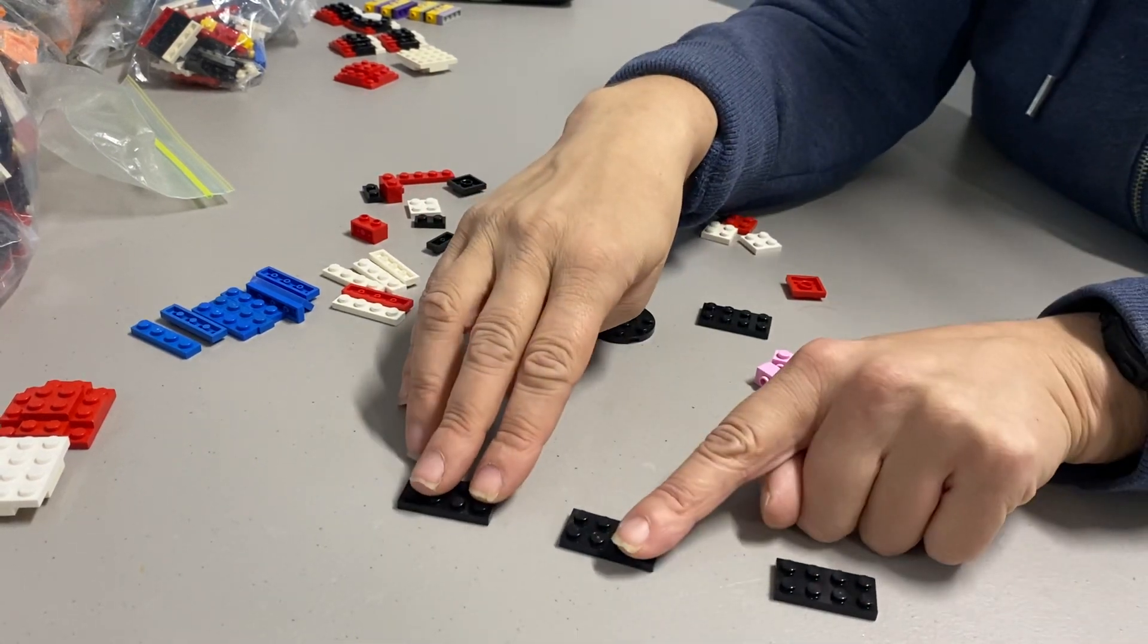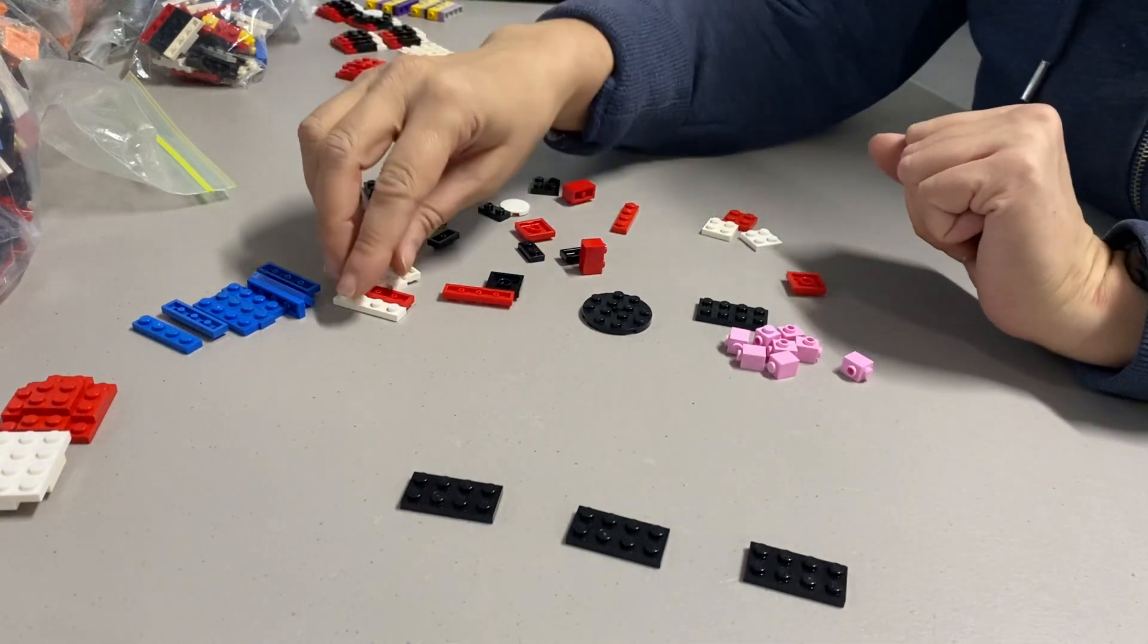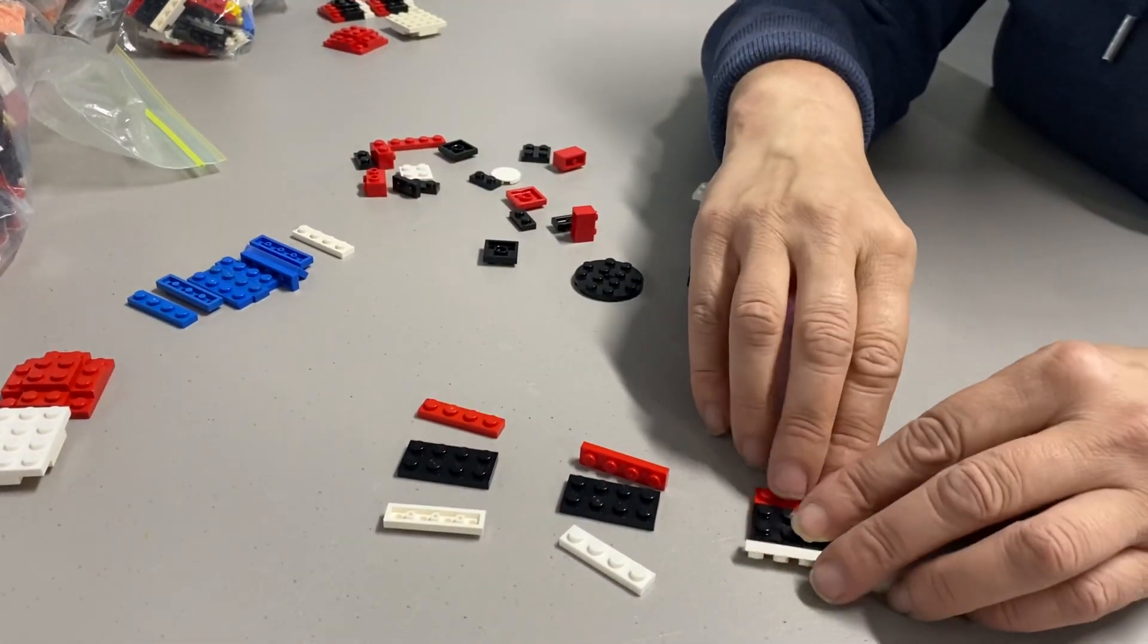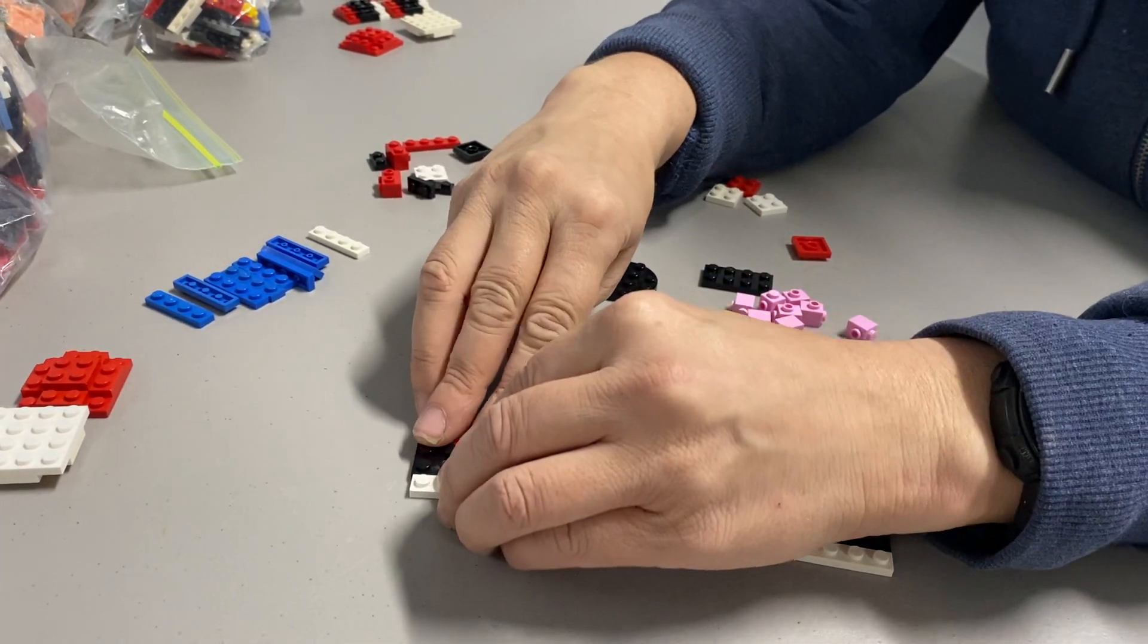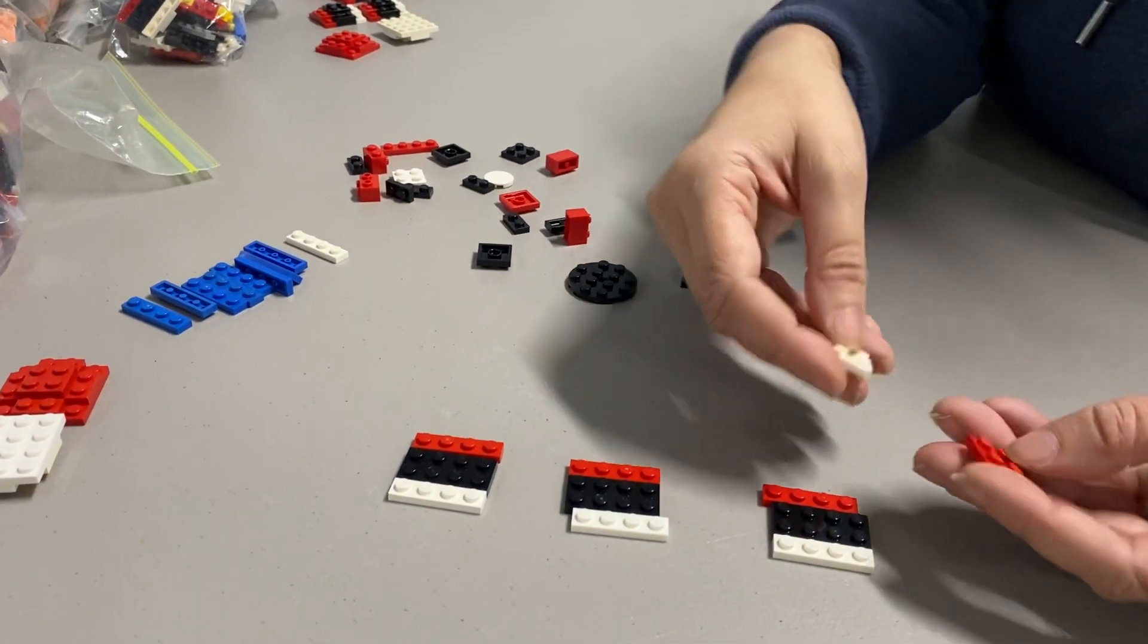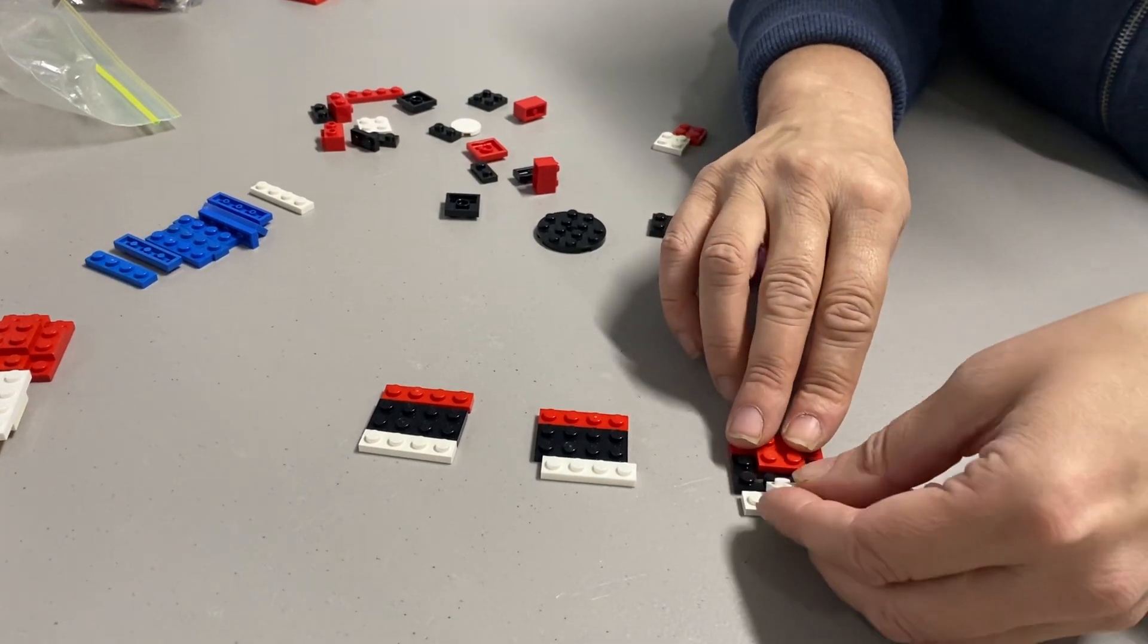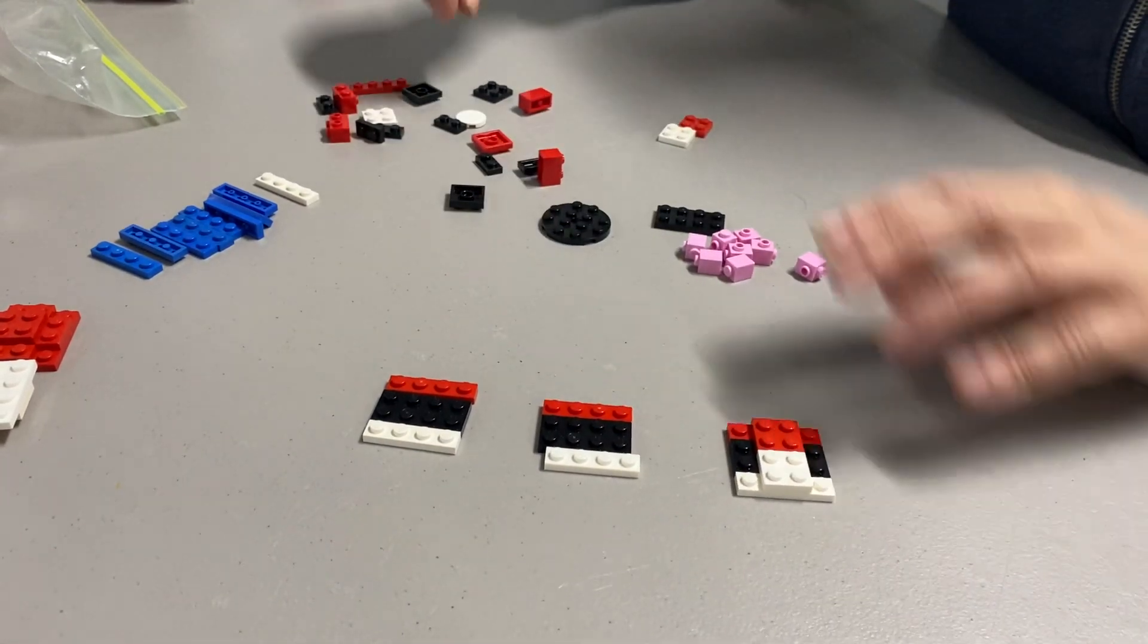Next we're going to build the same thing three times. Find three black two by fours. Everybody has four but right now they only need three. And find three white one by fours and three red one by fours. You're basically just lining these up with squares. Now you need to find, for each of these squares, you're going to find a red square and a white square. You stick the red square on here so it holds the red stripe to the black plate, and then you stick a white square on here so it holds the white stripe.